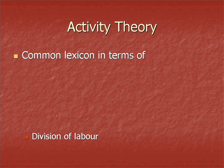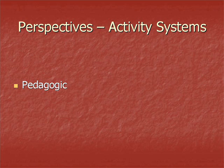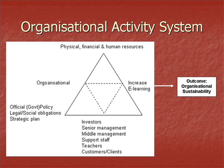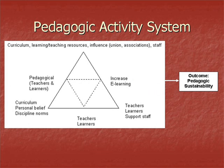If we assume that the object of each activity system — that is, organisational, technological and pedagogic — is to increase e-learning, the outcome of the object will vary between the systems. For the organisational activity system, the desired outcome is organisational sustainability. For the technological activity system, the desired outcome will be technological sustainability. For the pedagogic activity system, the desired outcome will be rigorous and sustainable pedagogy.